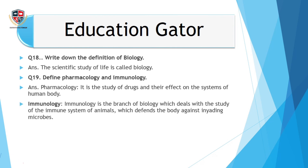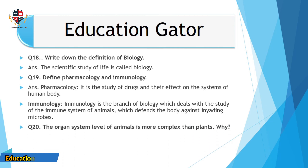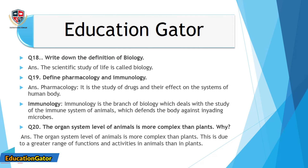Question number 19: Define pharmacology and immunology. Ans. Pharmacology is the study of drugs and their effect on the systems of the human body. Immunology is the branch of biology which deals with the study of the immune system of animals, which defends the body against invading microbes.